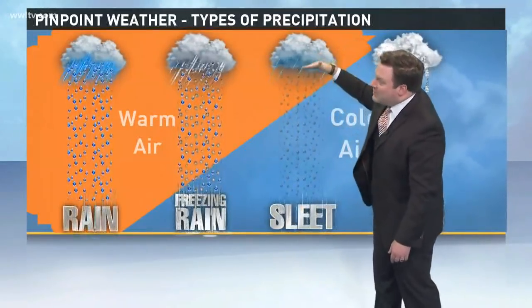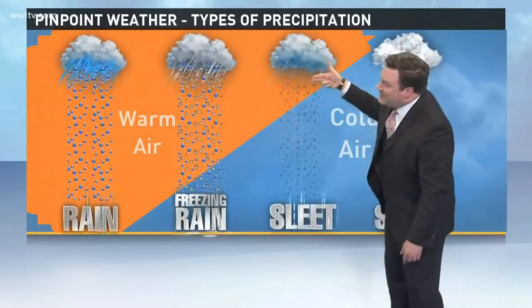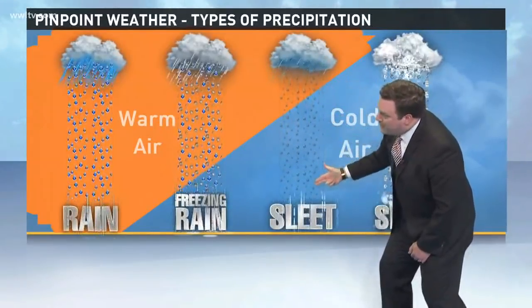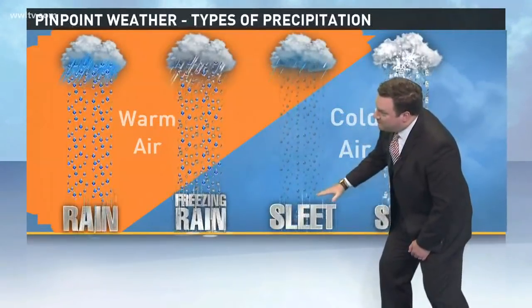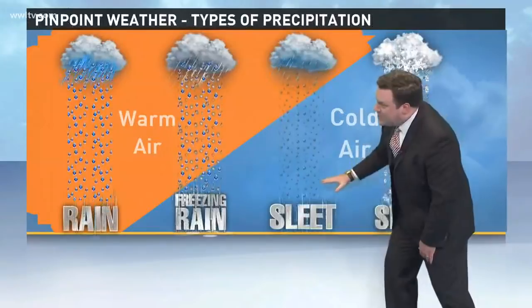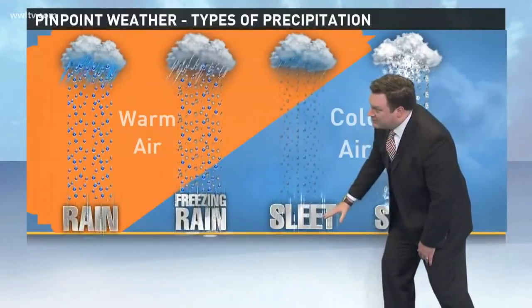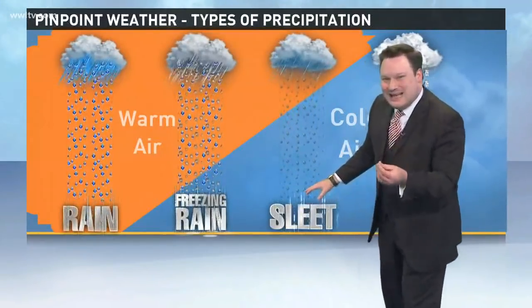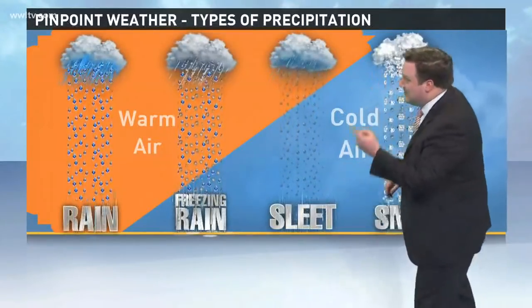Sleet is when you have liquid rainfall, and then through a much deeper column of frozen air with sub-freezing temperatures, it falls down to the surface as sleet — kind of like ice pellets sometimes.